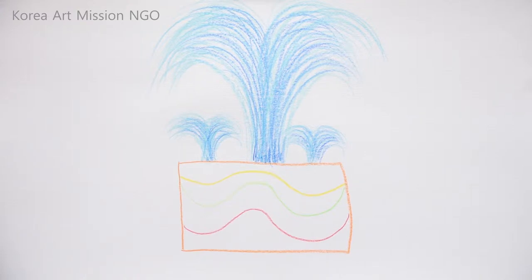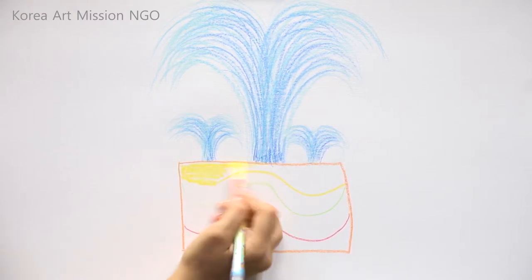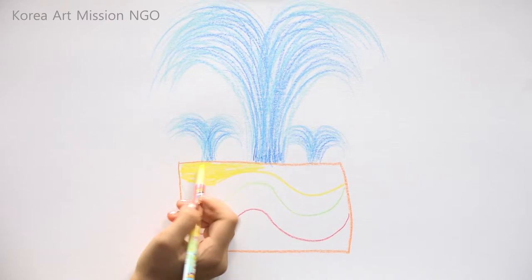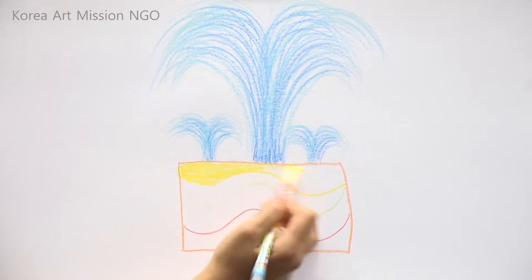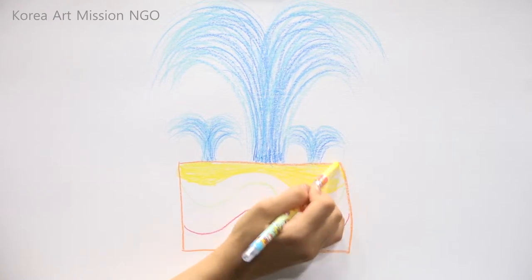And I'll try to color inside of the pattern with a colored pencil. Yellow, then yellow-green. Isn't it much more beautiful than when there were no patterns before?